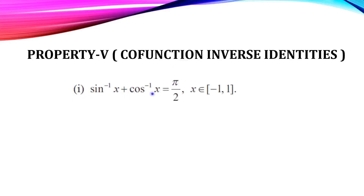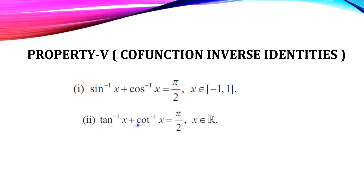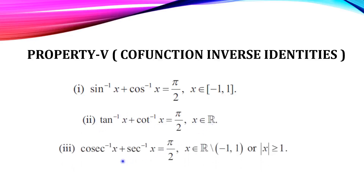First, sin inverse of x + cos inverse of x = π/2, for all x belonging to the closed interval [−1, 1] — the domain of sin inverse and cos inverse. Second, tan inverse of x + cot inverse of x = π/2, for all x belonging to real numbers. Third, cosecant inverse of x + secant inverse of x = π/2, for all x belonging to real numbers except (−1, 1), or |x| ≥ 1.